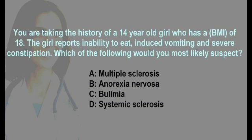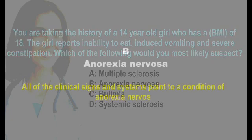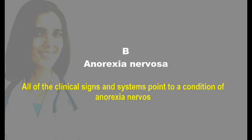Next question: you are taking the history of a 14-year-old girl who has a BMI of 18. The girl reports inability to eat, induced vomiting, and severe constipation. Which of the following would you most likely suspect? The options include anorexia nervosa and bulimia nervosa.